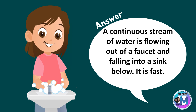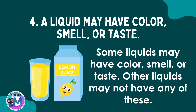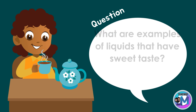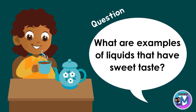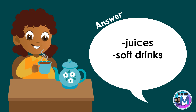It is fast. The fourth characteristic of liquid is: a liquid may have color, smell, or taste. Some liquids may have color, smell, or taste; other liquids may not have any of these. What are examples of liquids that have sweet taste? We have juices and soft drinks.